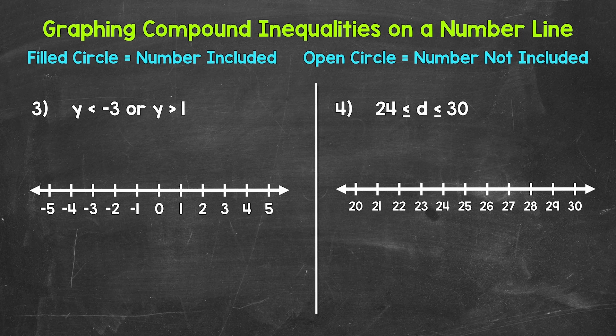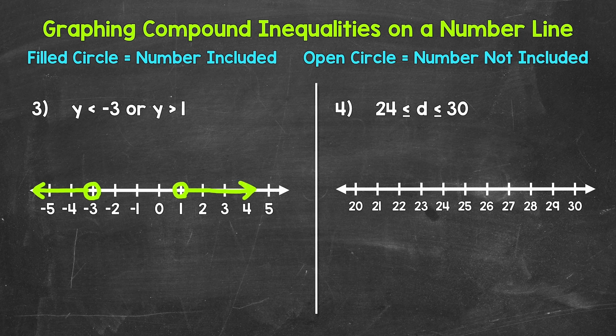Let's jump into number 3, where we have y is less than negative 3, or y is greater than 1. We need an open circle at negative 3 — negative 3 is not included — and then an arrow going left representing everything less than negative 3. Now we need y is greater than 1, so we need an open circle at 1 — 1 is not included — and then an arrow going right representing everything greater than 1. That's our graph on a number line of y is less than negative 3 or y is greater than 1.